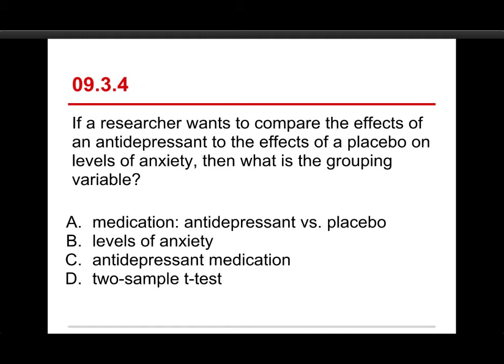Number four, if a researcher wants to compare the effects of an antidepressant to the effects of a placebo on levels of anxiety, then what is the grouping variable? It's the third time we've had variation on this question. The choices are medication, either antidepressant or placebo, or levels of anxiety, or antidepressant medication, or two-sample t-test.